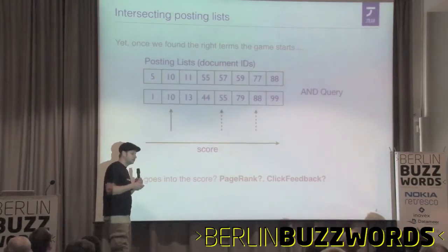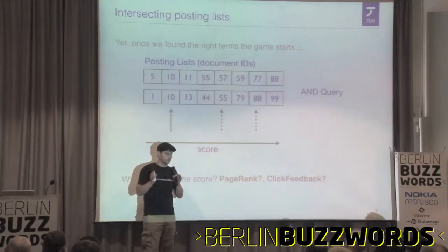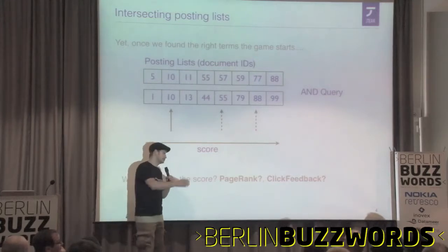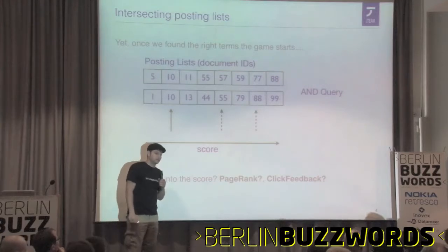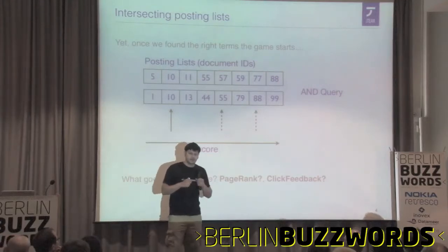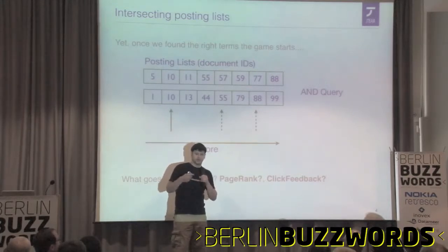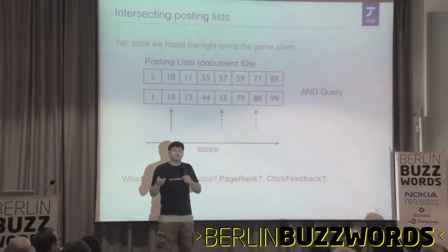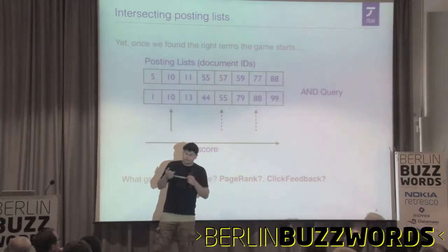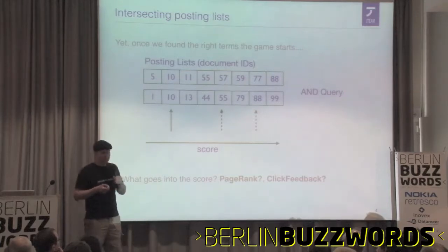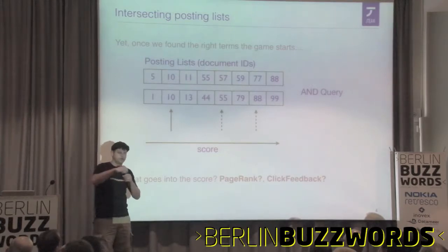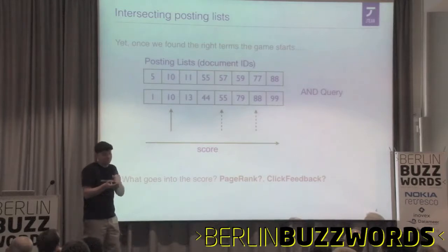A lot of people tend to do things like function queries in Solr. A function query is basically a function which returns a float value, and that float value is incorporated into the score. For instance, you have a web search and you want to do page rank. What you do is calculate the page rank for each document, put the page rank in a field, and when you score a document you can incorporate that value into the score. Pages which are more relevant should go up. You can use it as a tiebreaker or things like that.